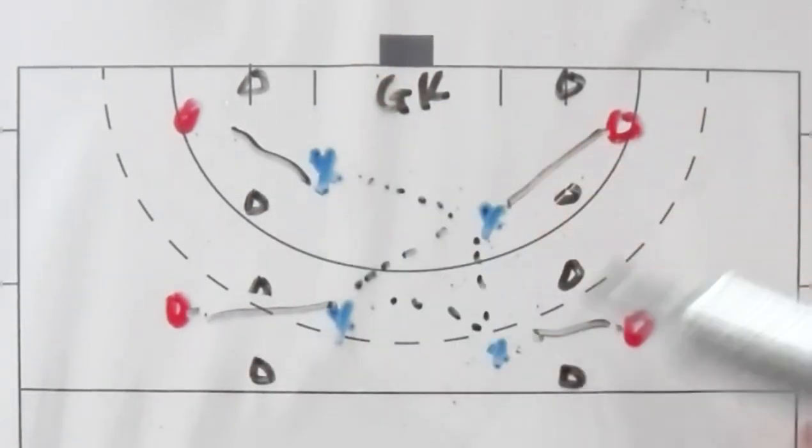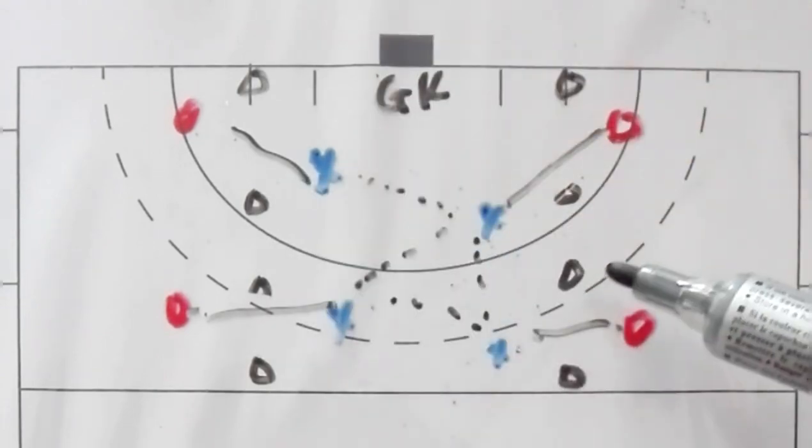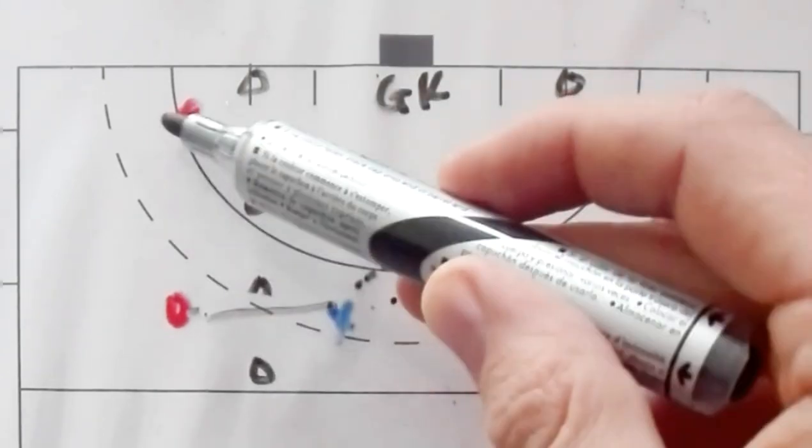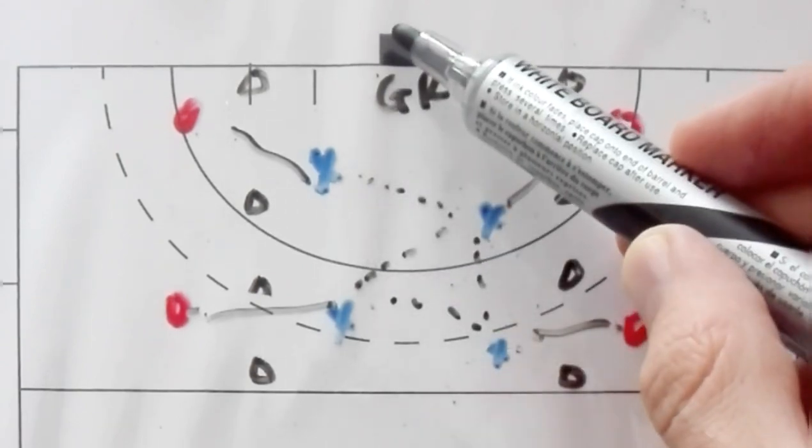The objective for the defenders is to keep the ball as long as possible away from the attackers. The attacker's objective is to get the ball as quick as they can and then go and score.